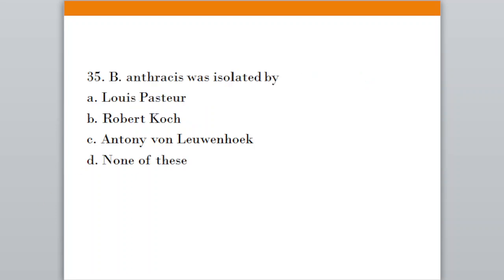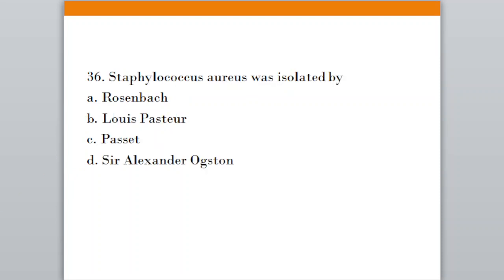Question number thirty-five: Bacillus anthracis was isolated by. Option A, Louis Pasteur; Option B, Robert Koch; Option C, Anthony von Leeuwenhoek; Option D, none of these. The correct answer is option B, Robert Koch. Question thirty-six: Staphylococcus aureus was isolated by. Option A, Rosenbach; Option B, Louis Pasteur; Option C, Pacini; Option D, Alexander Ogston. The correct answer is option B, Louis Pasteur.